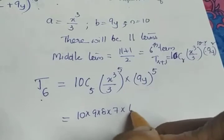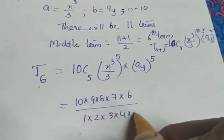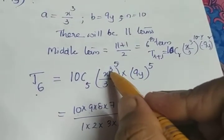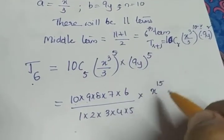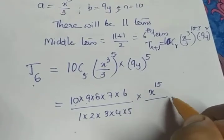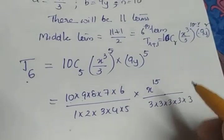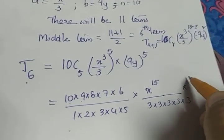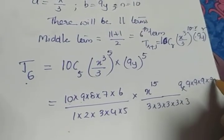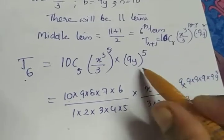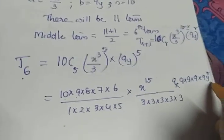10C5 is (10 × 9 × 8 × 7 × 6) / (1 × 2 × 3 × 4 × 5). Then (x³)^5 gives x^15, divided by 3^5, which is 3×3×3×3×3. And (9y)^5 gives 9^5 × y^5.